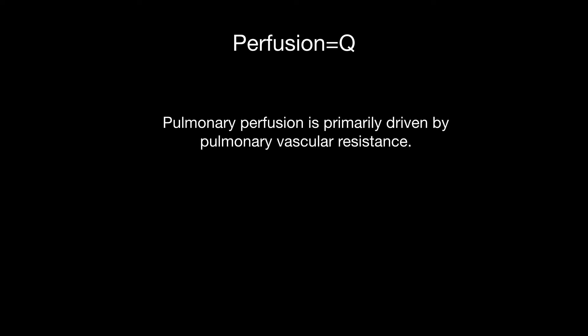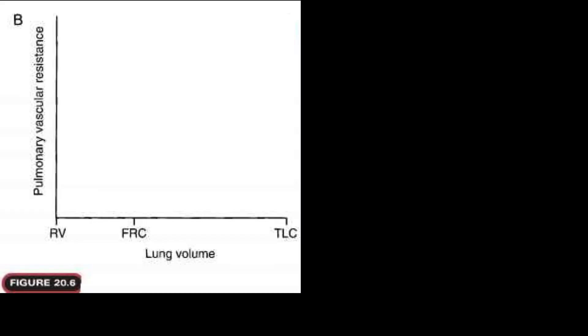Now let's move on to perfusion. Perfusion is Q in the VQ mismatch equation, and perfusion is primarily driven by pulmonary vascular resistance. Let's look at a graph of lung volume versus pulmonary vascular resistance. When the lungs are small — at residual volume — pulmonary vascular resistance is very high.